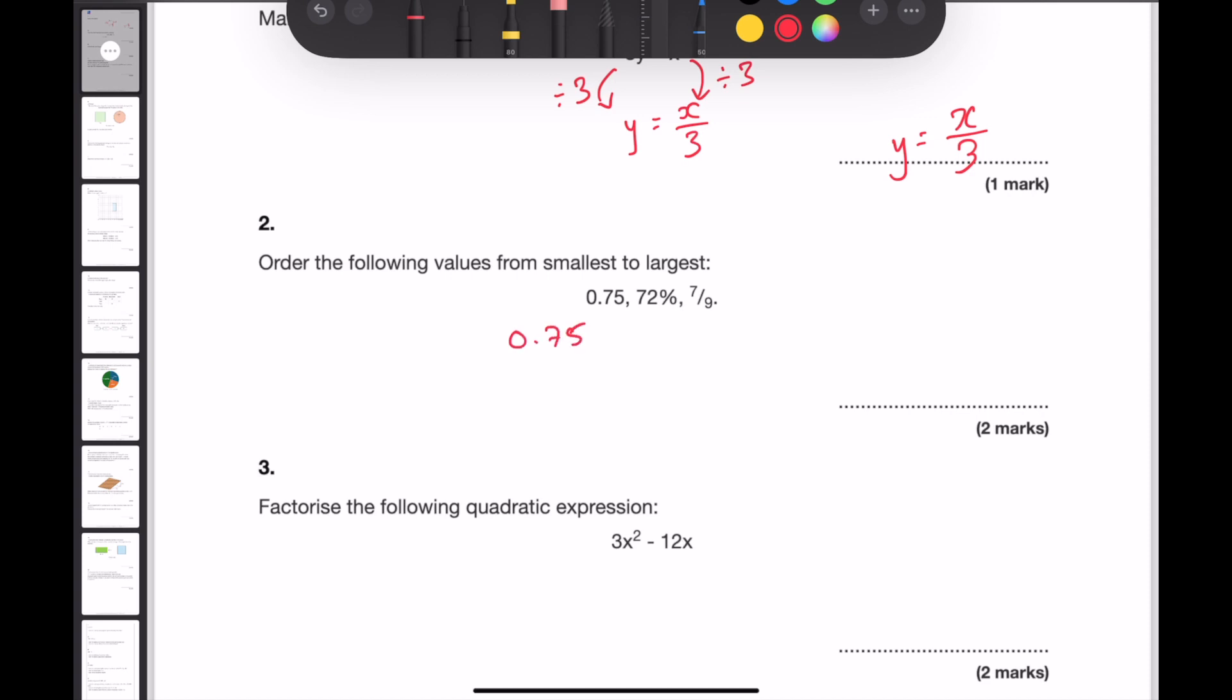0.75 will be 0.75. 72%, to turn this into a decimal, we divide by 100, and this will give me 0.72. In order to be able to convert a fraction into a decimal, we need to divide the numerator by the denominator. And doing this will give me 0.777 recurring.